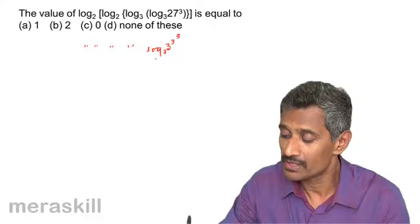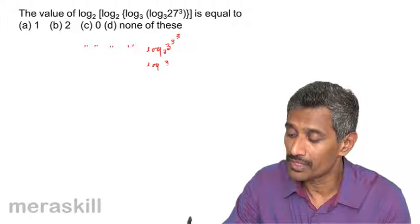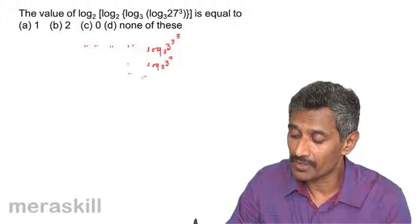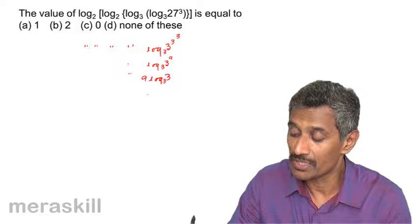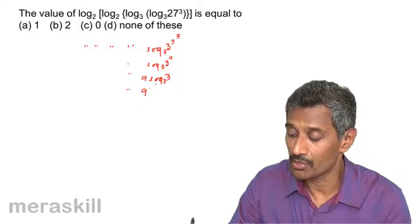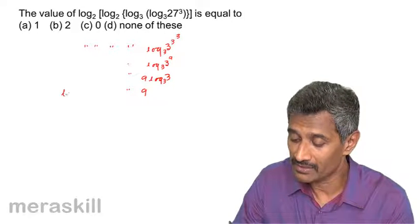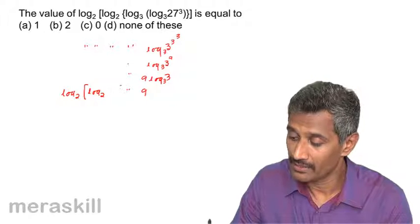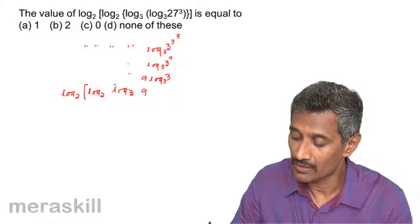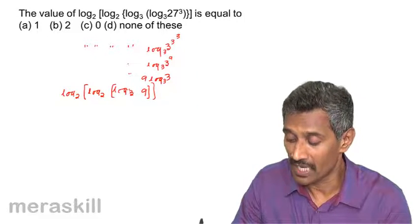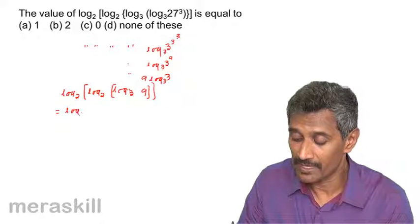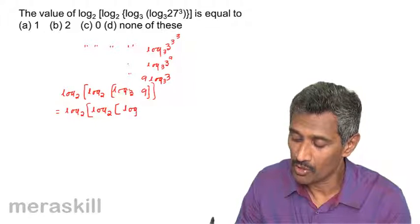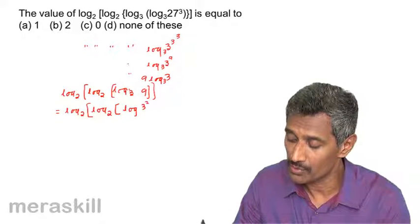This is nothing but log of 3 raised to 3 into 3, which is 3 raised to 9, to the base 3. The other things stay the same. This becomes 9 log 3 to the base 3, which is 9 itself because log 3 to the base 3 is 1. So at this stage we have log of 9 to the base 3. This can be written as log of 3 squared to the base 3.